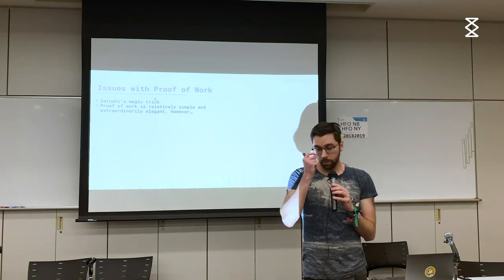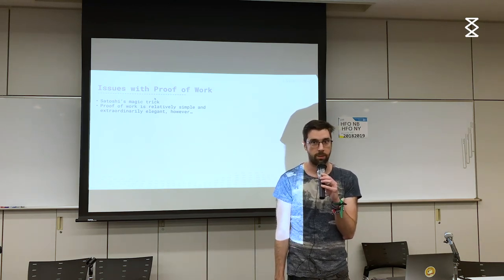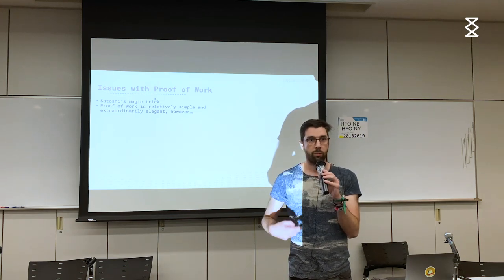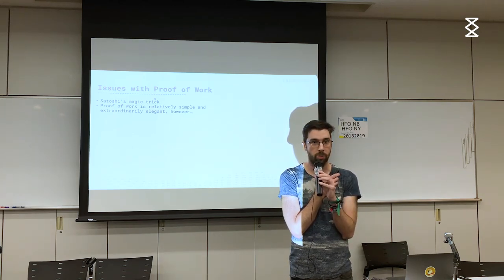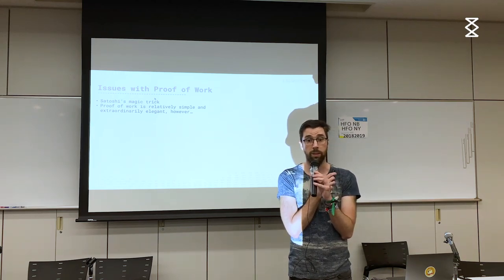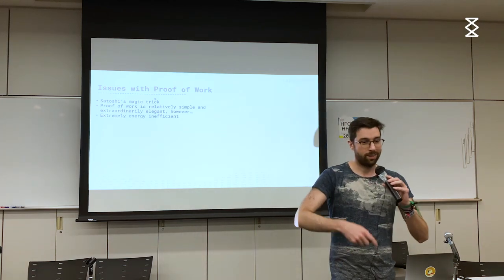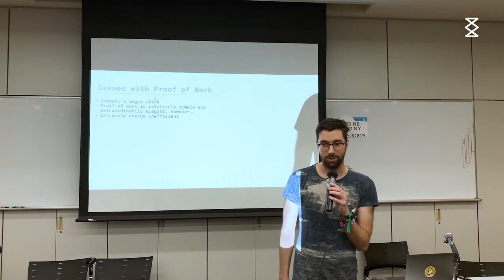Proof of work is very elegant. It has really nice mathematical properties — someone who hasn't been following from Genesis can immediately validate that the proof of work in the block headers all the way back to the first block is valid, relatively quickly. That's much harder to do with things like proof of stake.